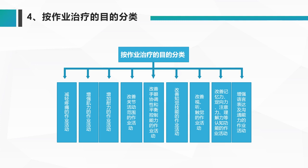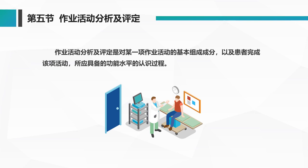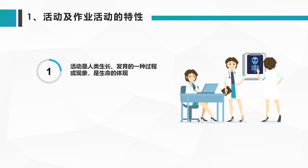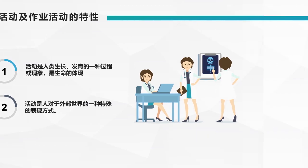最后一个目的是增强语言表达和沟通能力的作业活动。第五节，作业活动的分析和评定。作业活动分析和评定是对某一项作业活动的基本组成部分，以及患者完成这项活动所具备的功能水平的认识过程。活动是人类生长和发育的一种过程和现象，是生命的体现，也是人对外界的一种特殊表现方式。